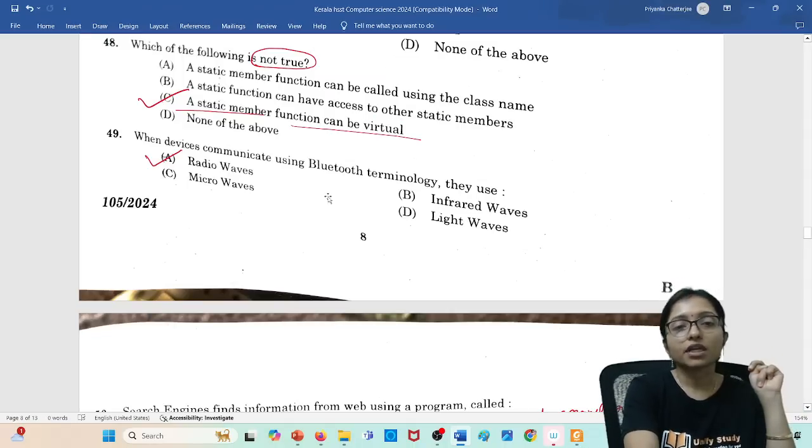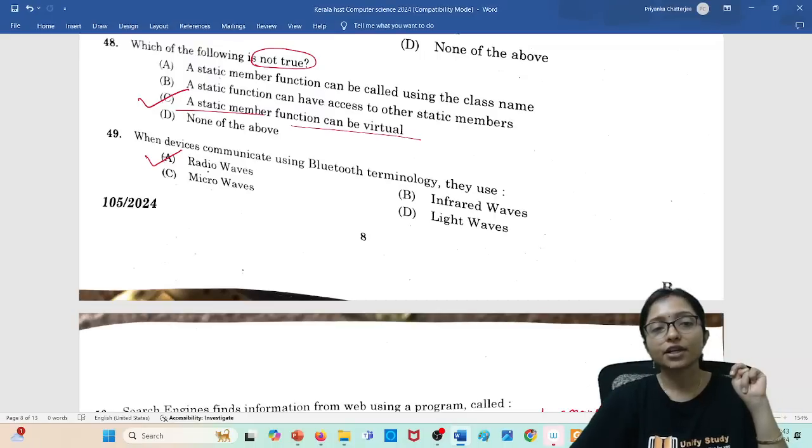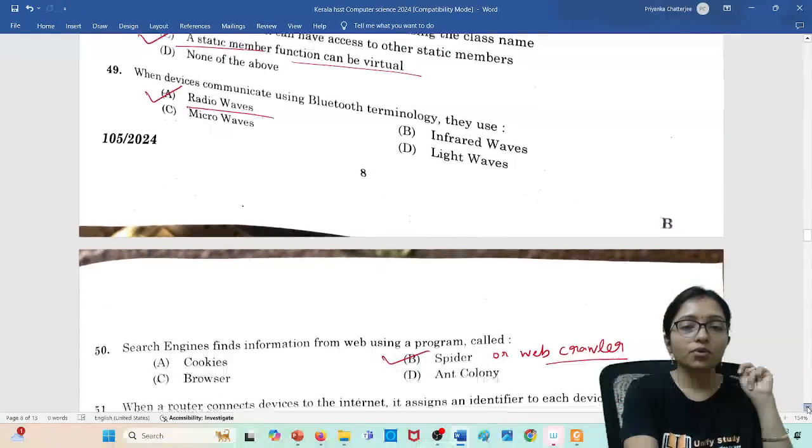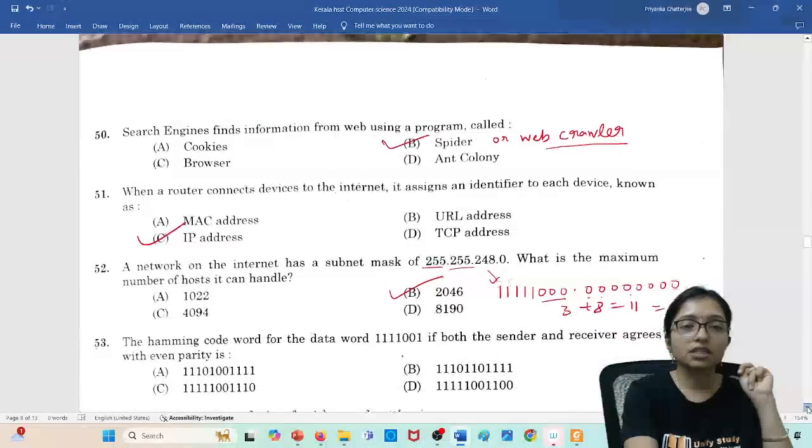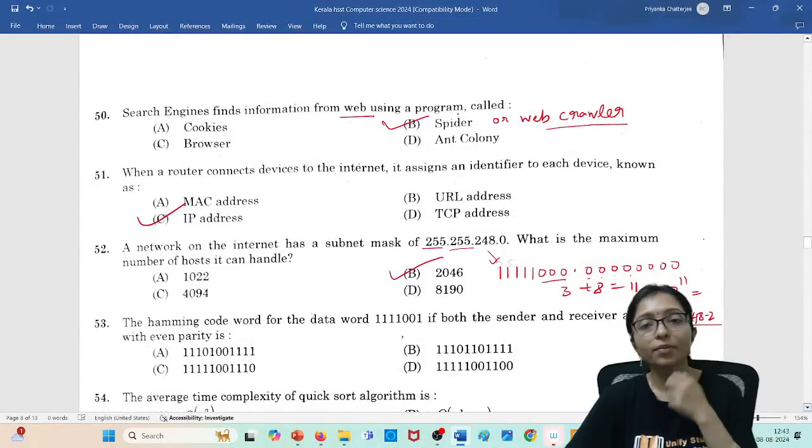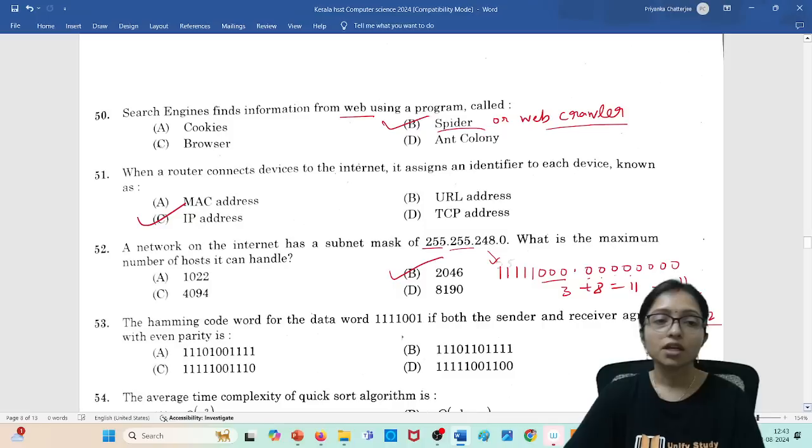The device communication with Bluetooth, in which wave? That is radio wave will be the correct answer. The search engine finds information using web crawler, which is called actually web crawler or spider. So answer is spider.